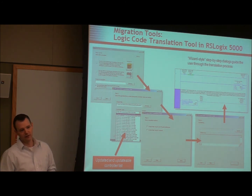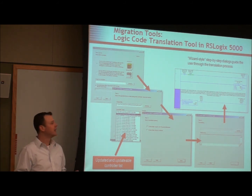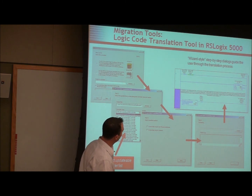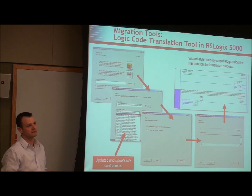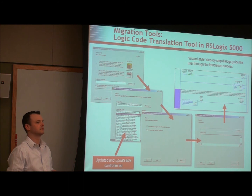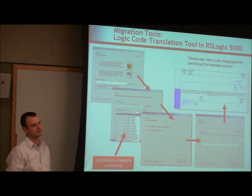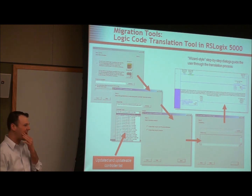I recommend doing a full test and validation of the system to make sure everything is performing as desired before putting it into production. The conversion tool will get you at least 95% of the way there and save you a lot of labor. One more thought: if you're going from an SLC to one of these new processors and some functionality of your SLC system was dependent on scan time — and there are applications like that — all of a sudden your scan time goes from a Yugo to a Lamborghini, and there could potentially be issues there.